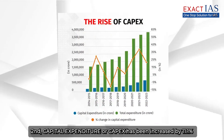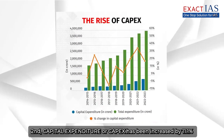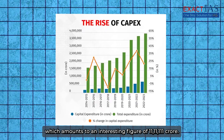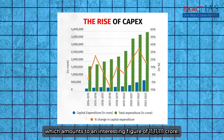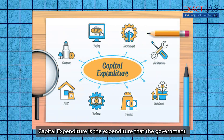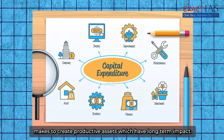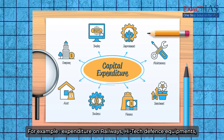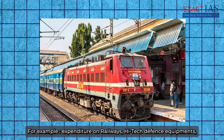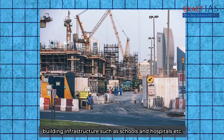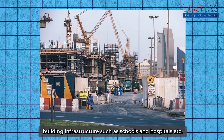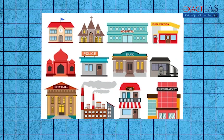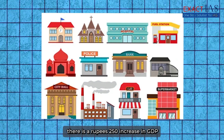Second, capital expenditure or capex has been increased by 11.1%, amounting to an interesting figure of Rs 11,11,111 crore. Capital expenditure is the expenditure that the government makes to create productive assets which have long-term impact — for example, expenditure on railways, high-tech defence equipment, building infrastructure such as schools and hospitals, etc. For every 100 rupees spent on capital expenditure, there is a Rs 250 increase in GDP.